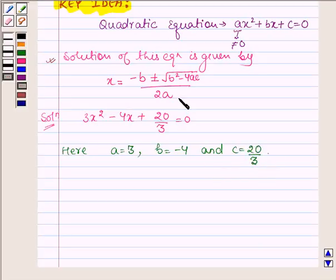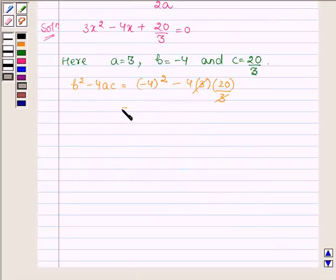So first let us evaluate b² - 4ac. b is -4 so (-4)² - 4(3)(20/3). Cancelling the common multiples we have 16 - 80 which is equal to -64, and since -1 = i², this can be written as 64i².